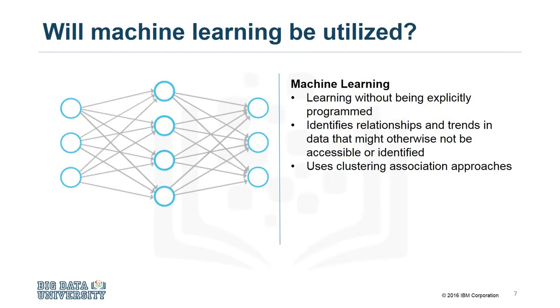Machine learning is a field of study that gives computers the ability to learn without being explicitly programmed. Machine learning can be used to identify relationships and trends in data that might otherwise not be accessible or identified.